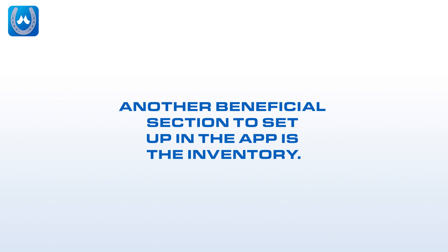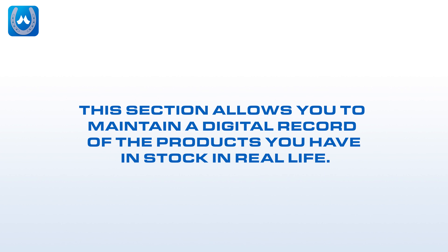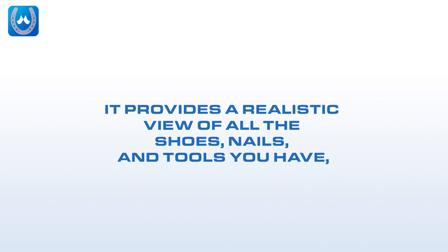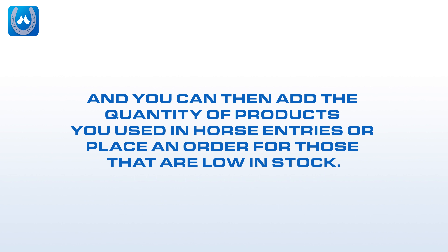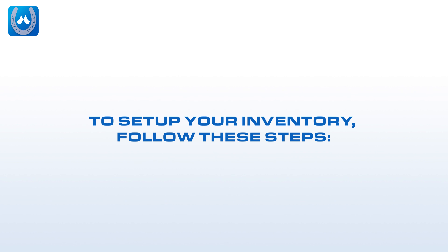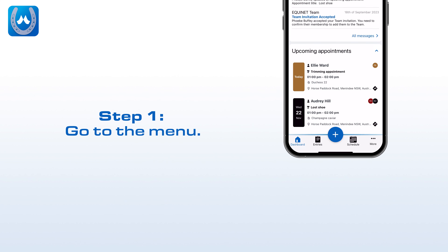Another beneficial section to set up in the app is the Inventory. This section allows you to maintain a digital record of the products you have in stock in real life. It provides a realistic view of all the shoes, nails, and tools you have, and you can then add the quantity of products used in horse entries or place an order for those that are low in stock. To set up your inventory, follow these steps.